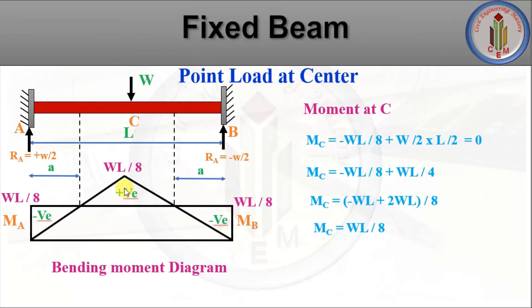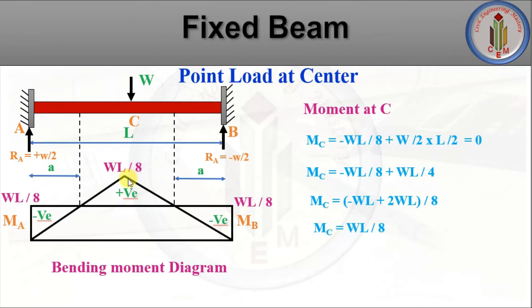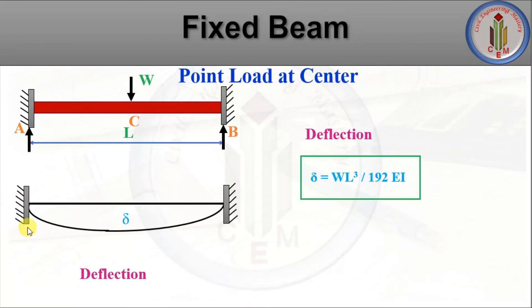After combining the bending moment diagrams, we find the bending moment at midpoint C. Taking moment at C: MC = −WL/8 + (W/2) × (L/2) = WL/8. So the bending moment at mid-span is also WL/8. All bending moments — at A, at C, and at B — have the same magnitude of WL/8, since the load acts at the midpoint.